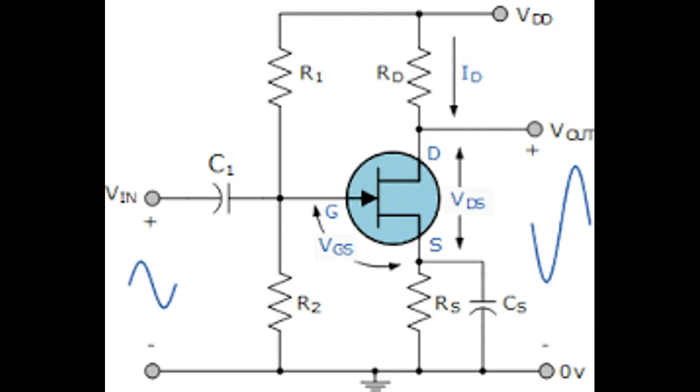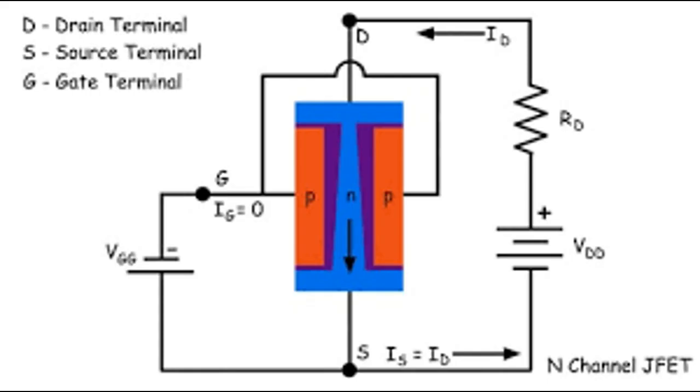So, how does a JFET transistor work? Let's have a look. When voltage VDS is applied between the drain and source terminals and gate terminal voltage is zero,